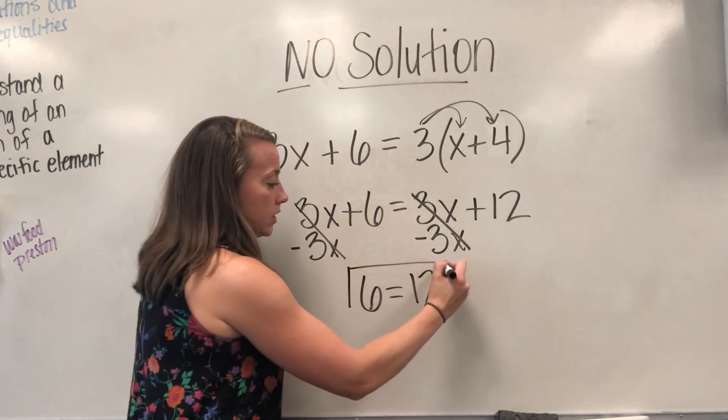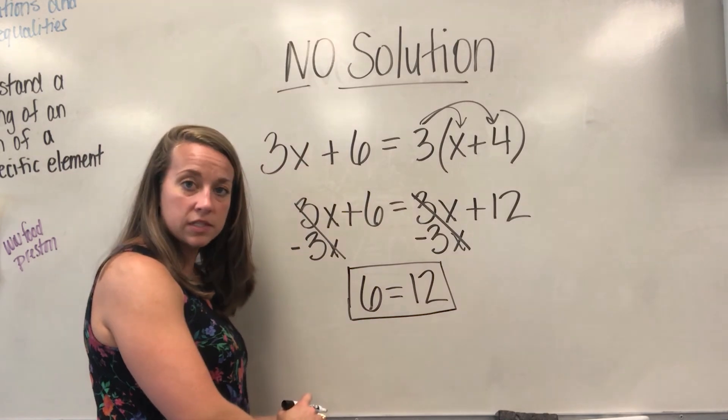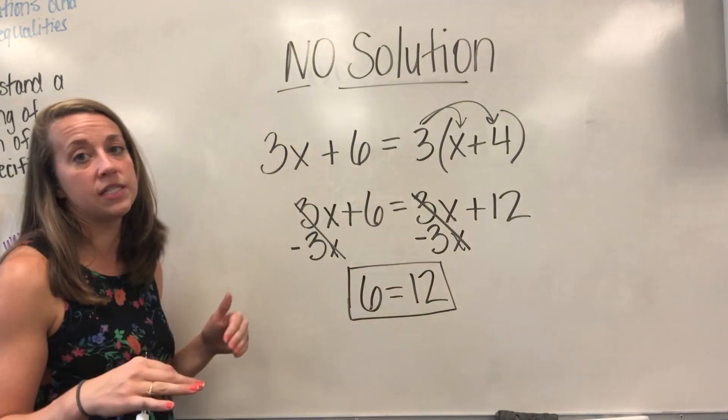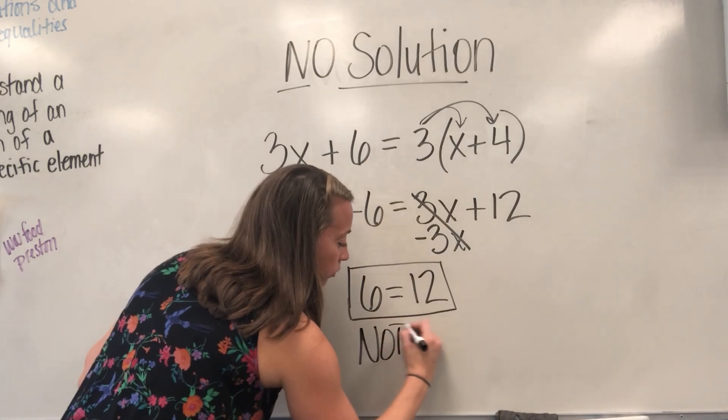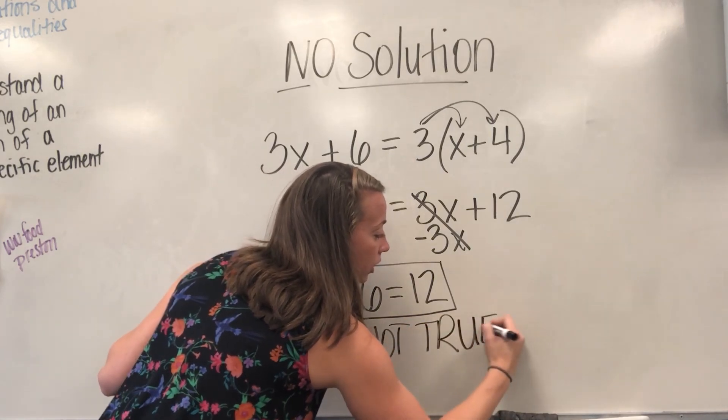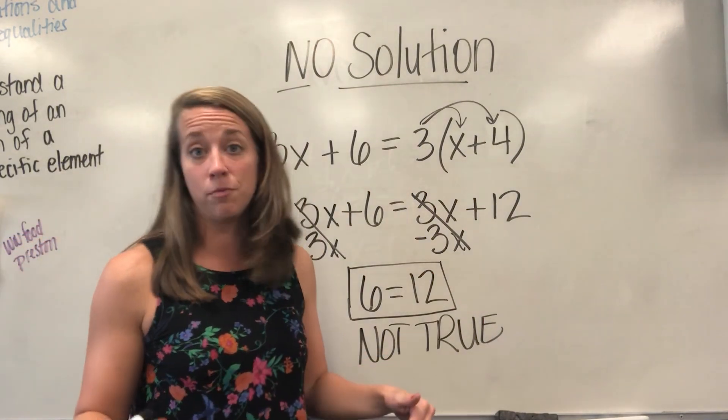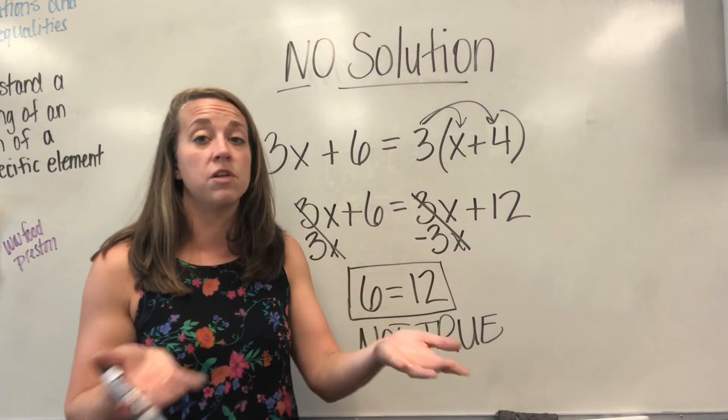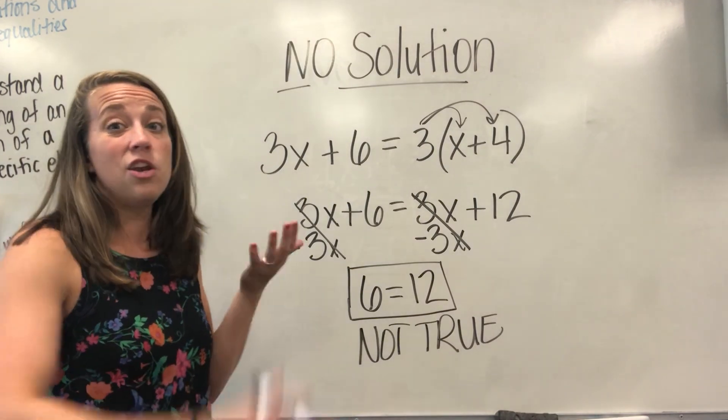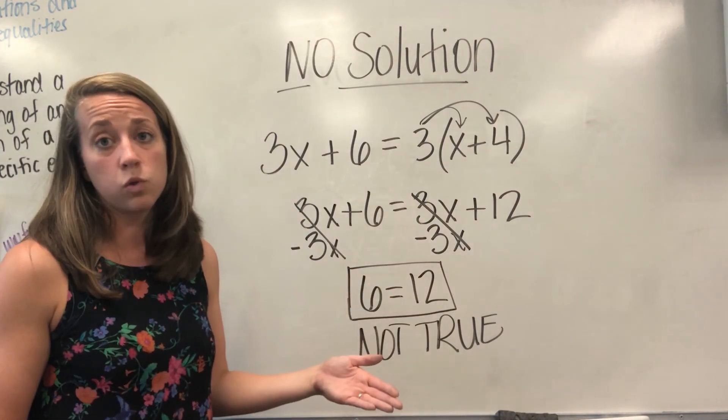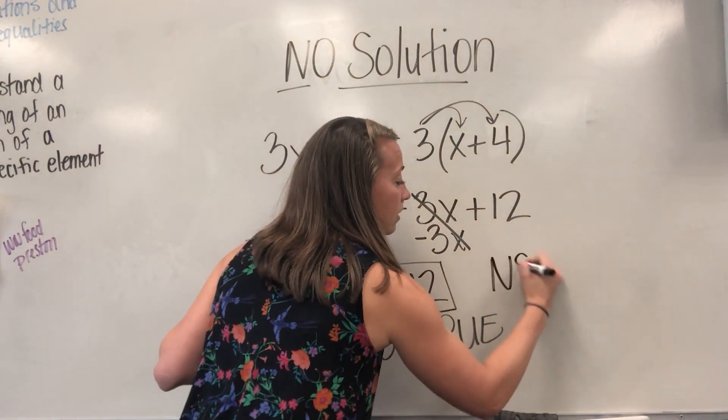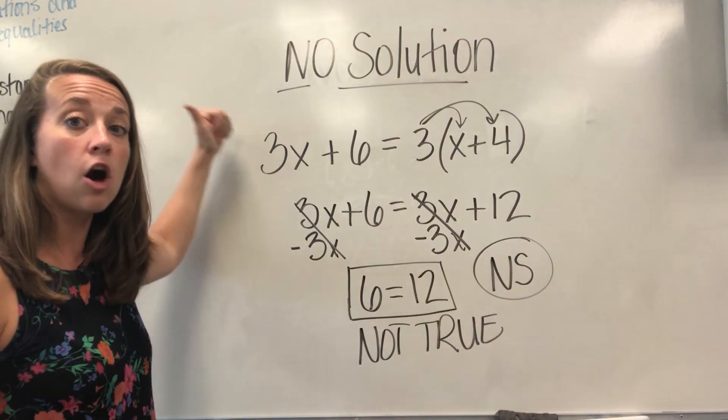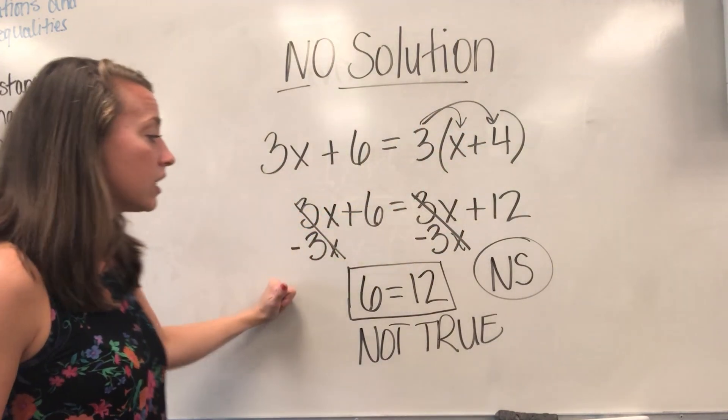That leaves me with 0. So technically, I've canceled out in both spots. And all I'm left with on the right is the number 12. So I've gotten all the way down to 6 equals 12, and all of my variables disappeared. The way you know that this is no solution is because you are left with an untrue statement. 6 does not equal 12. 6 will never equal 12. This statement is not true, and it will never be true. Your variables have now canceled each other out, leaving you with two constants that are not the same.